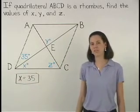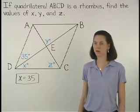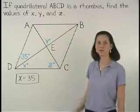Next, since the diagonals of a rhombus are perpendicular, Y must equal 90.